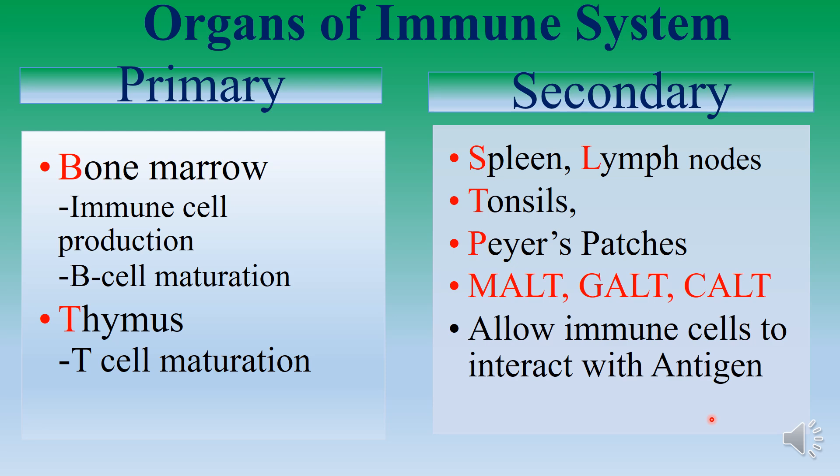MALT stands for mucosa-associated lymphoid tissue. GALT stands for gut-associated lymphoid tissue, and COLT stands for conjunctiva-associated lymphoid tissue. So these are the various secondary organs of the immune system.